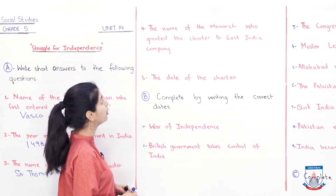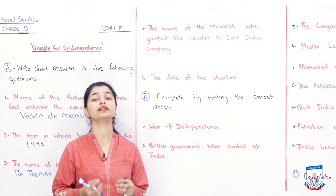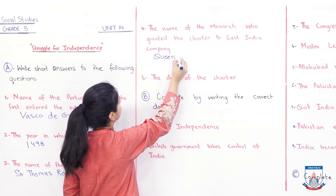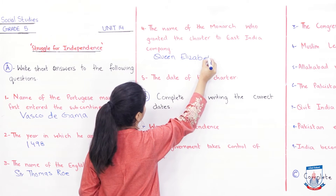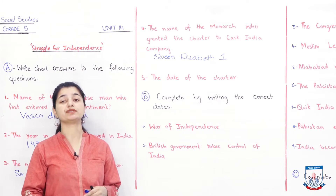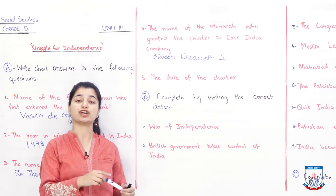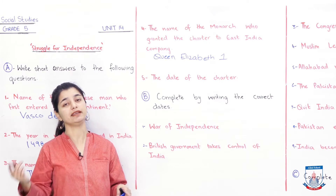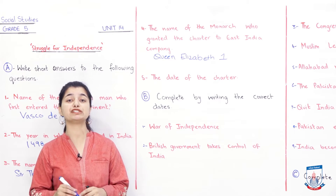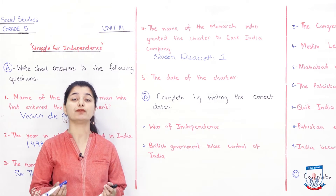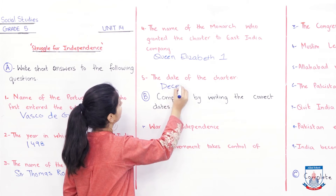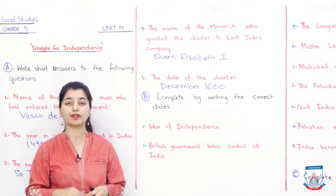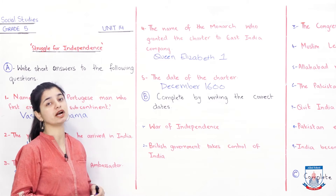Question number 4: the name of the monarch who granted the charter of the East India Company. The monarch was Queen Elizabeth I of England. She was the person who decided that the East India Company would form a charter, which they granted and accepted, and then they formed the East India Company for trade between England and India. You also need to mention the date of the charter — it happened in December 1600. That is when the British started coming to India. Thomas Rowe came, talked to Jahangir, and by the end of 1600 they had signed the charter for the East India Company.